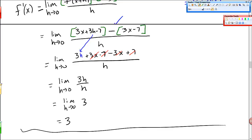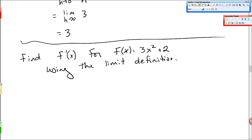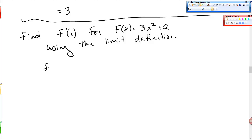I want to do one more example where we have a quadratic and where you find the derivative using this definition. So find f prime of x for f of x is equal to 3x squared plus 2, using the limit definition, or the four-step process. So now we have f prime of x. I go back to this is the definition: limit as h goes to 0 of f of x plus h minus f of x over h.